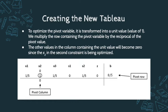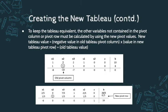We have the pivot row, pivot column, and the new pivot variable of 1. To keep the tableau equivalent, the other values not in the pivot column or row must be recalculated: multiply the negative of the value in the old pivot column by the value in the new pivot row corresponding to the value being calculated, then add that to the old tableau value. Summarized as: new tableau value = (negative old pivot column value) × (new pivot row value) + old tableau value. This gives us the new updated tableau.